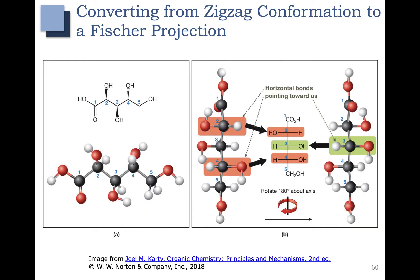If you have a standard zigzag conformation, you need to be able to convert this into a Fischer Projection. In a Fischer Projection, if you were looking at the molecule from the top, the groups attached to carbon 2 and carbon 4 are sticking out at you. The groups attached to carbon 3 are only going to stick out at you if you're looking at the molecule from the bottom. You almost have to imagine yourself looking at the molecule from the top, then the bottom, and then the top again. This is what the molecule would look like from the top with the groups on 2 and 4 sticking out at us, and this is what it looks like from the bottom with the groups on 3 sticking out at us.